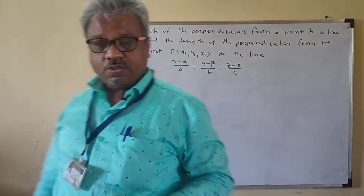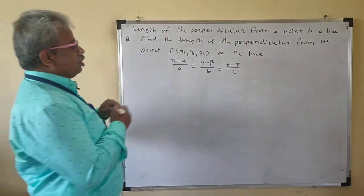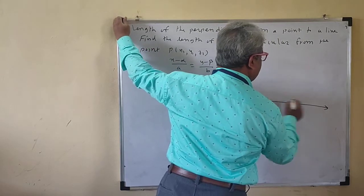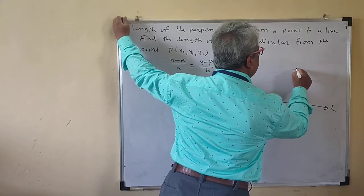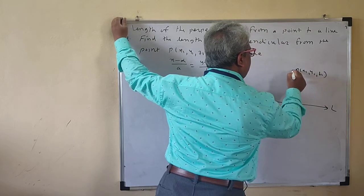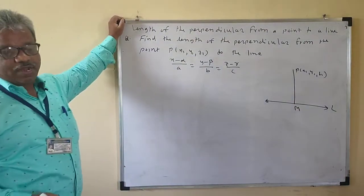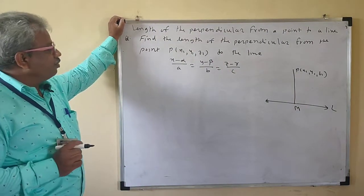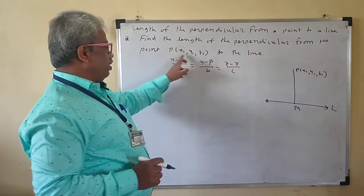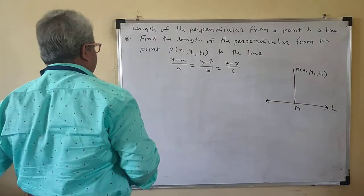So now we will find the distance. Suppose this is a line L, and suppose P is the point here: (x1, y1, z1). We want the perpendicular distance of a point from a line. So find the length of a perpendicular from the point P(x1, y1, z1) to the line. The equation of the line is provided to you.